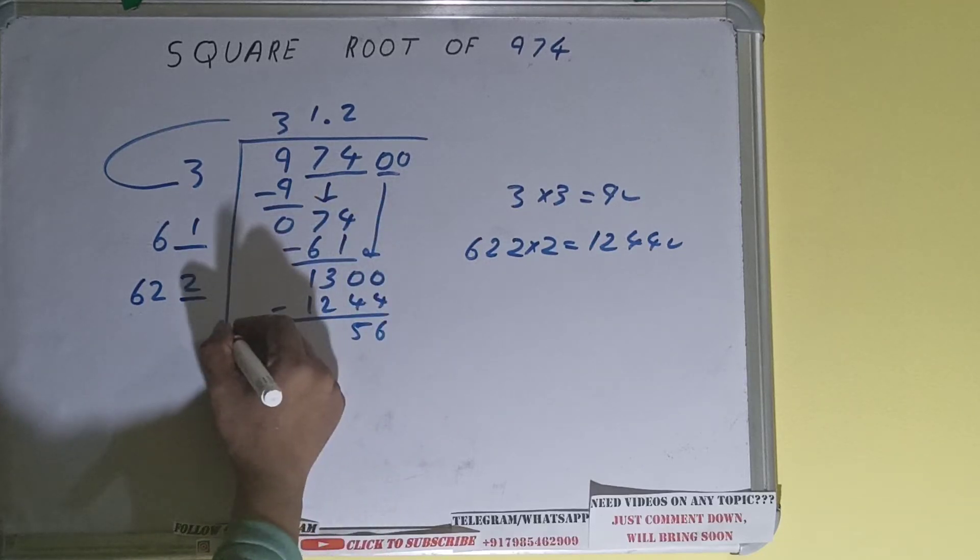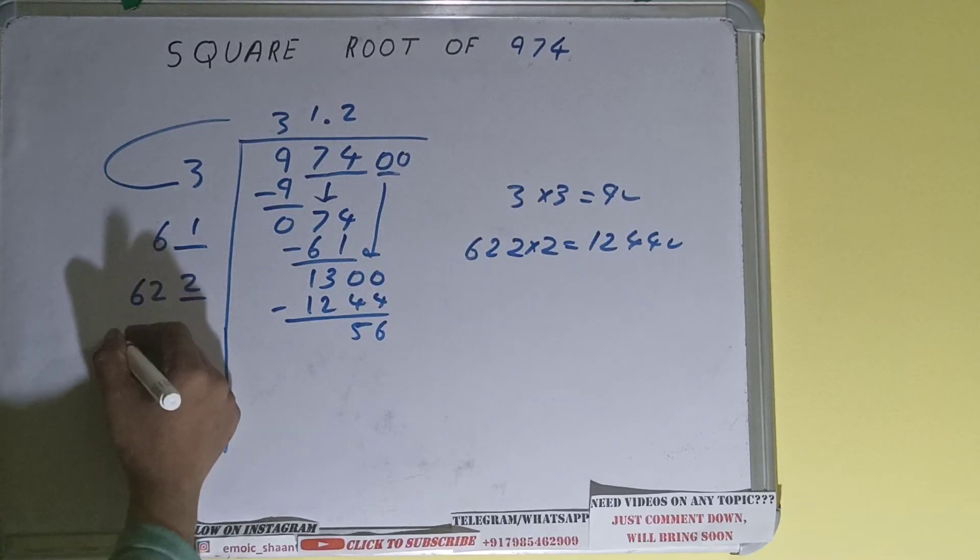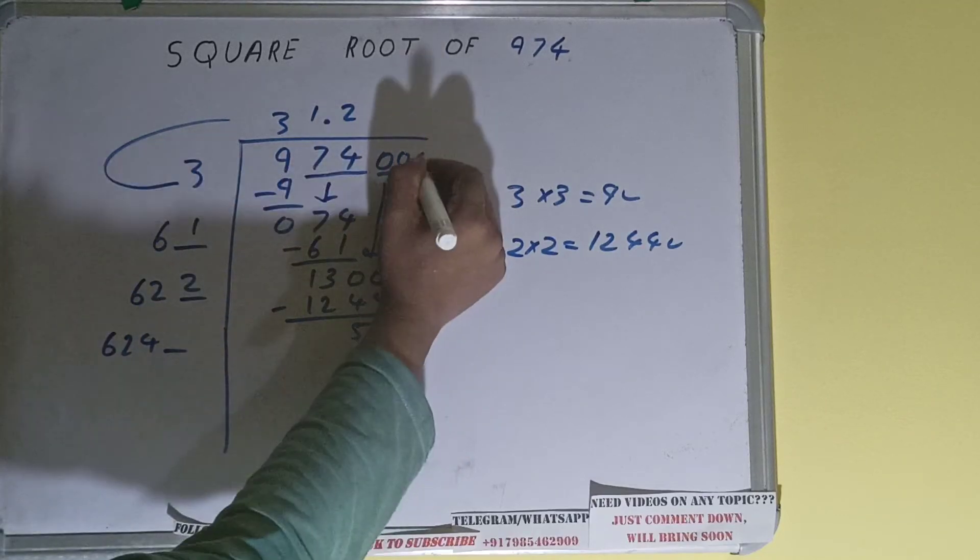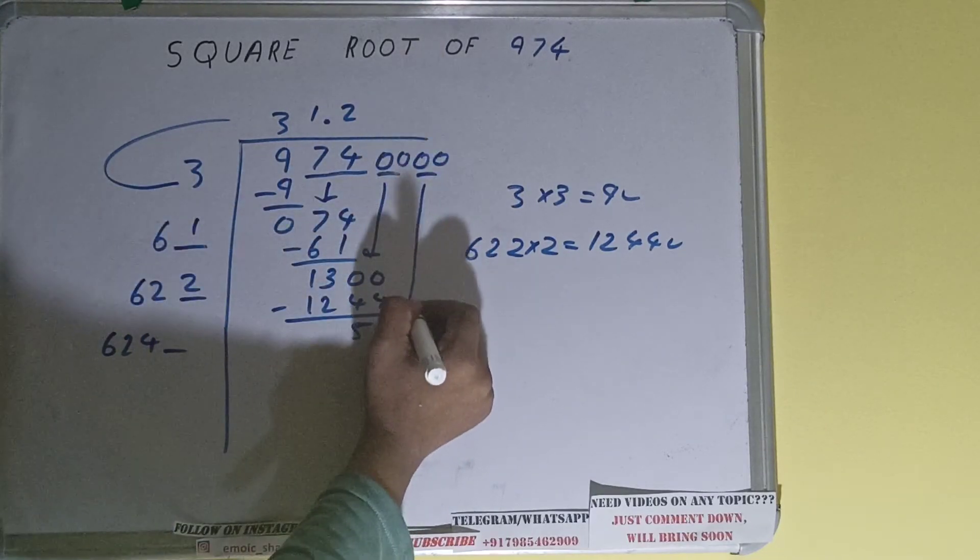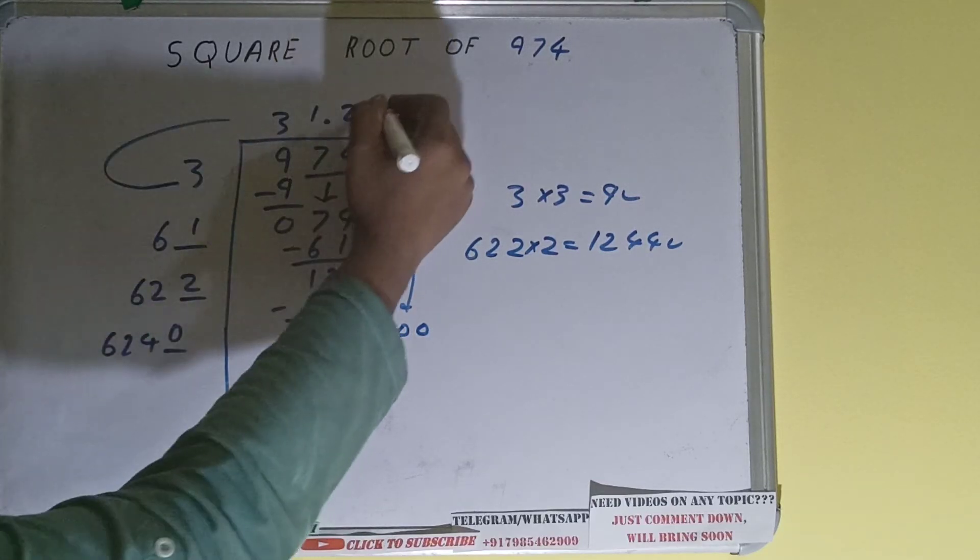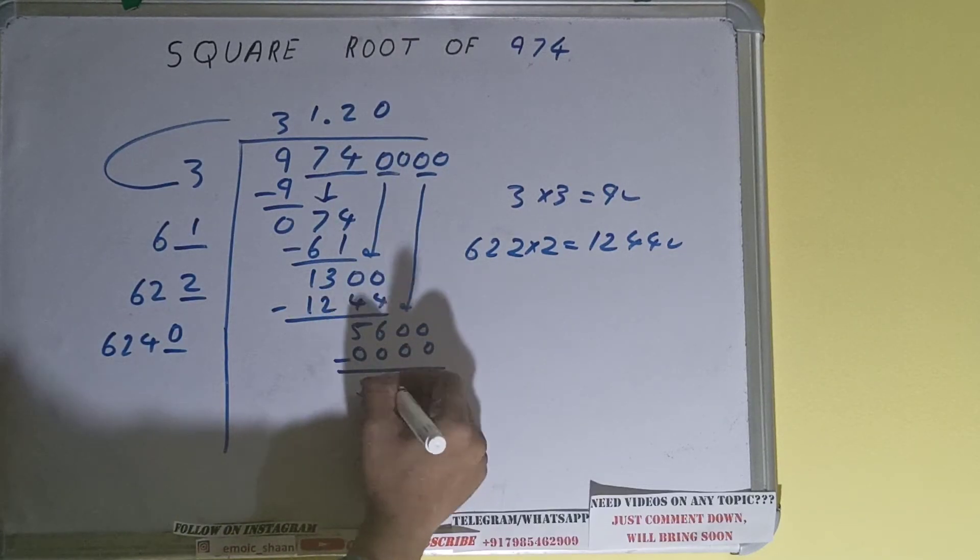Now 622 into 2 we did, so add both: 622 plus 2 will be 624 and one digit extra. And this number we need to make it big, so bring the next pair down and it will become 5600. Now we can use 0, and on subtracting it will be 5600.